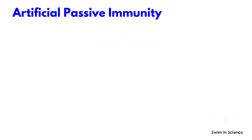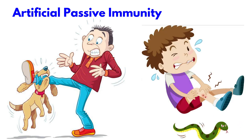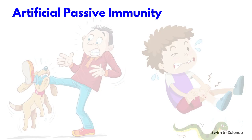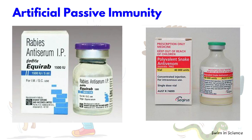Examples include treatment following a bite from a potentially rabies-infected animal, or following a bite from a venomous snake. In both cases, appropriate anti-sera or anti-venom may be administered to offer passive immunity.